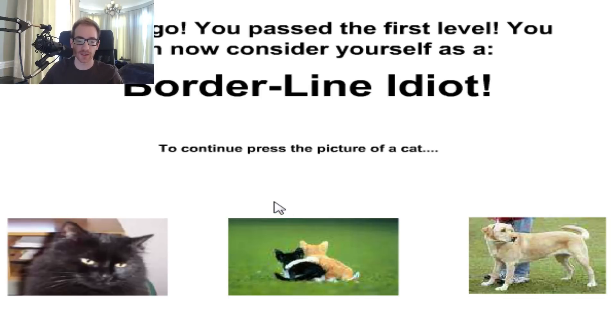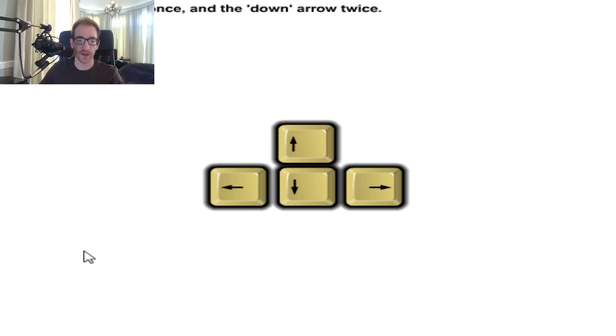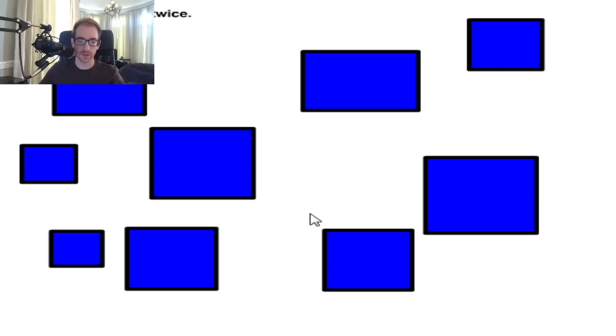I don't know if it gets harder than this. To continue, press the picture of the cat. The one cat. Okay. Press the up arrow once and the down arrow twice. One. One, two.